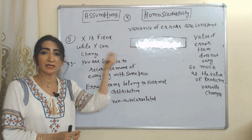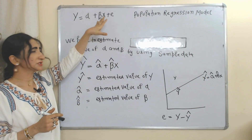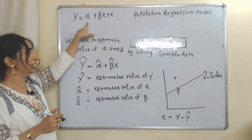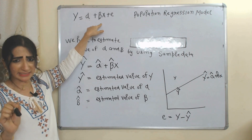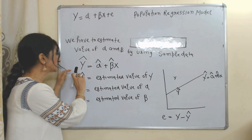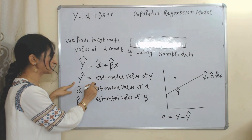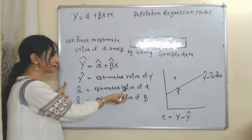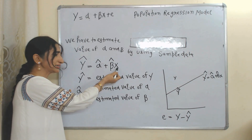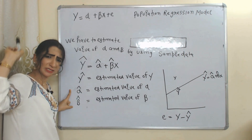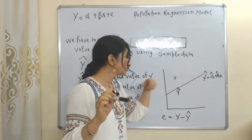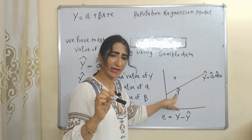Error terms are also non-autocorrelated, meaning the value of error terms in period one is not related to the value in period two. Now suppose this is the equation of the population regression model and we have to estimate the values of alpha and beta using sample data. Once estimated, we get a new equation where y-hat represents the estimated value of y, alpha-hat is the estimated value of alpha, and beta-hat is the estimated value of beta.